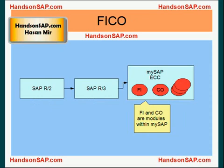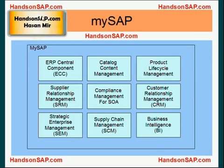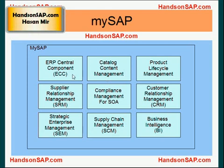MySAP ECC has multiple modules. For example, FI and CO are modules within MySAP — financials and controlling modules are part of the MySAP ECC suite. MySAP has multiple suites, and each suite is a group of modules. MySAP includes ERP Central Component, supplier relationship management, strategic enterprise management, catalog content management, compliance management, supply chain management, product lifecycle management, customer relationship management, and business intelligence.